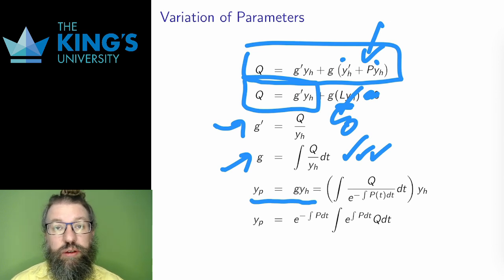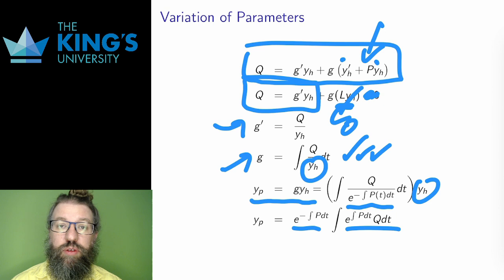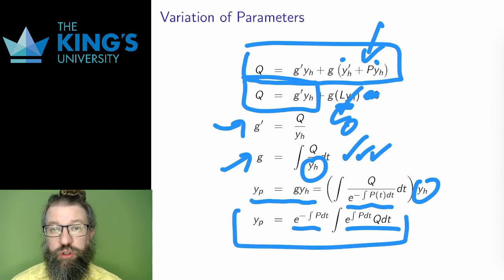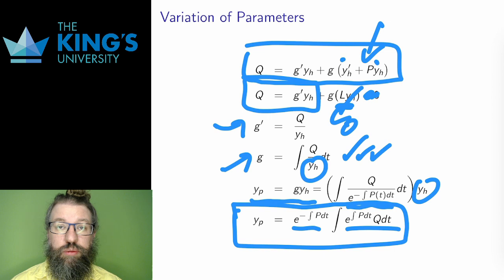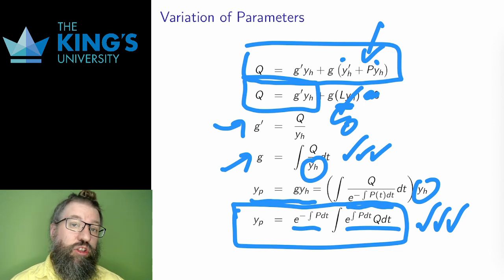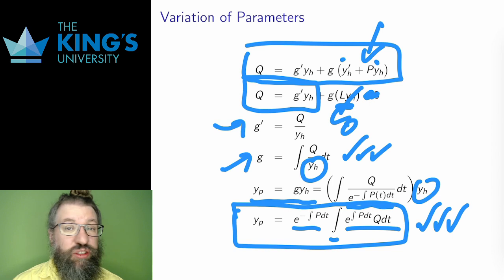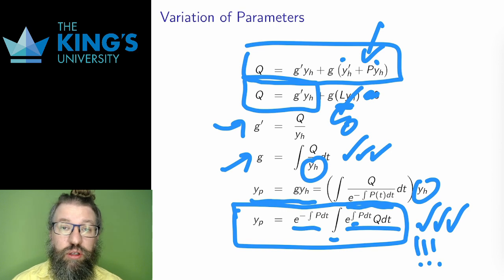Putting it all together: y_h = e^(−∫P(t)dt), so I can substitute y_h into the expression for g and simplify — writing e to the negative in the denominator and e to the positive in the numerator. This gives a general form for the particular solution. We could solve different linear equations this way by figuring out P and Q, doing these integrals, and writing down the particular solution. Notice this is a bit crazy — there's an integral inside another integral with an exponential in between.